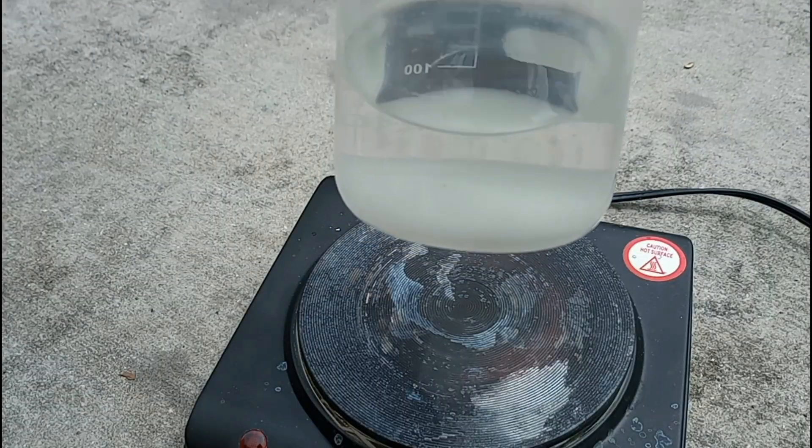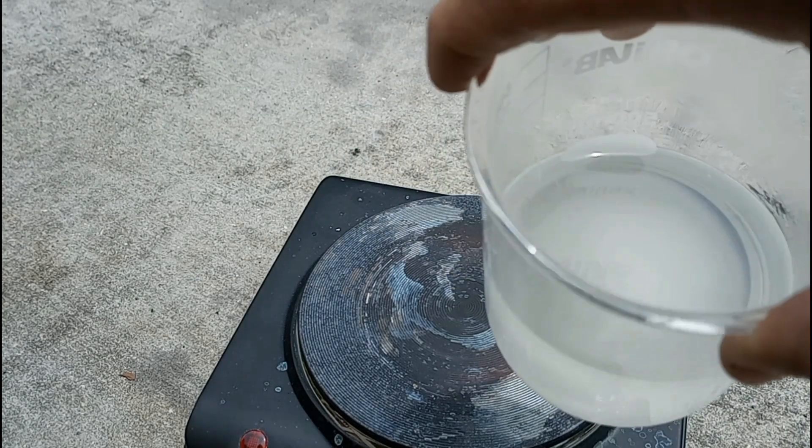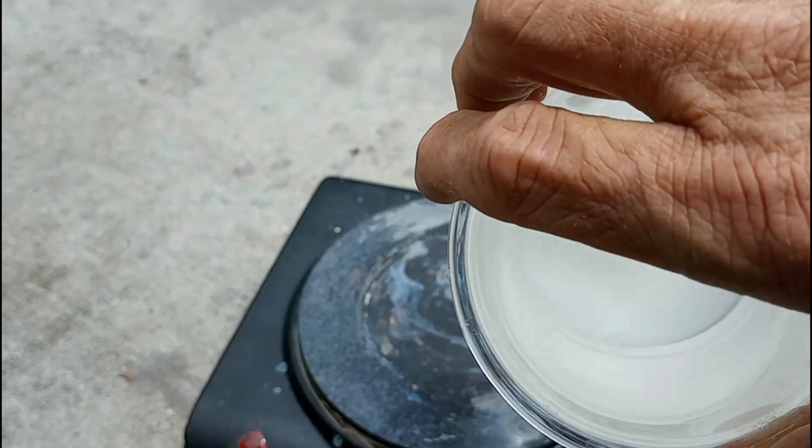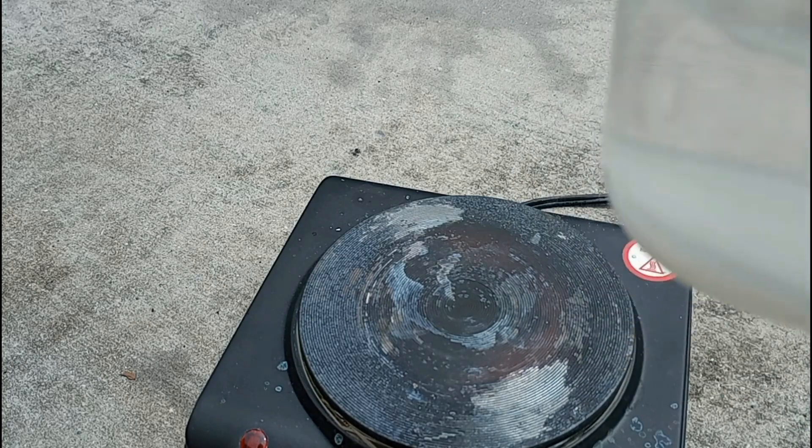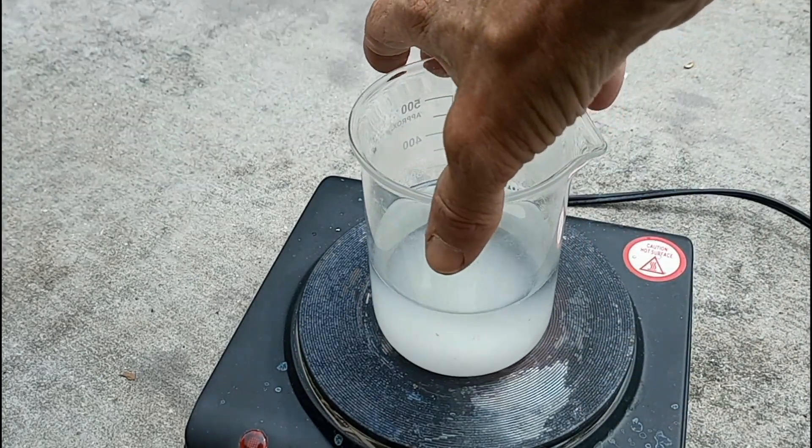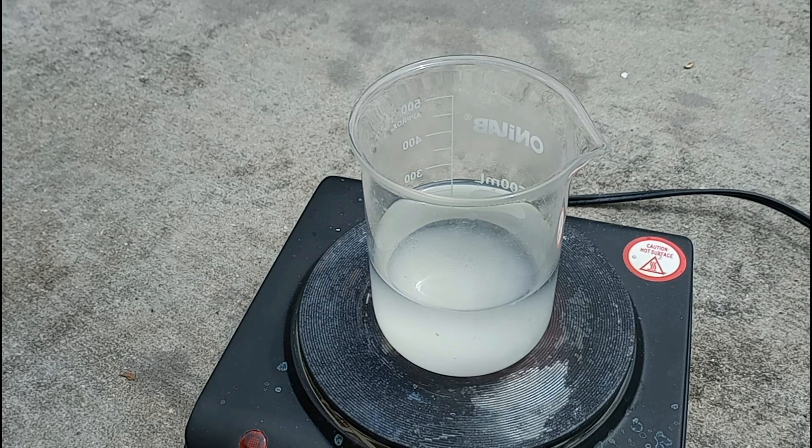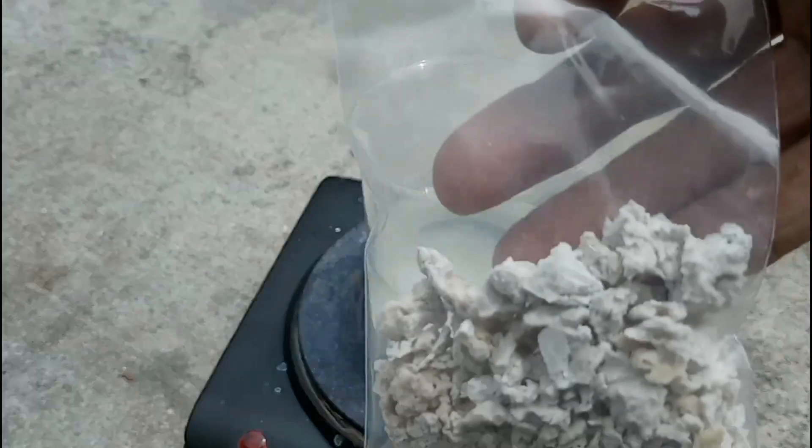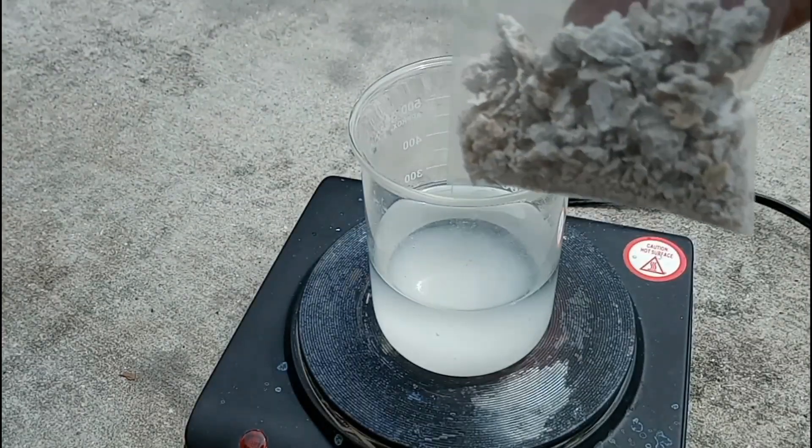So the beaker did clean up relatively easy, and here's the wash water from it. Now, interestingly enough, it didn't all dissolve. It left behind this white powdery substance. And this is just from the wash water. This is the solids that we pulled off.